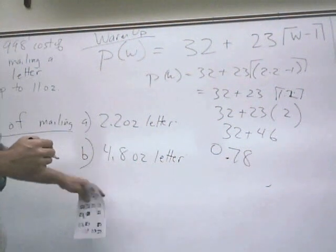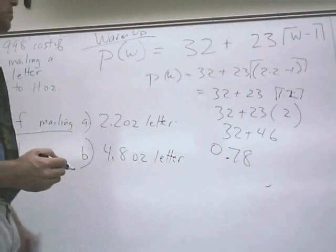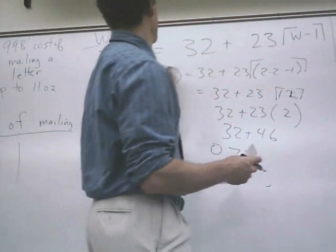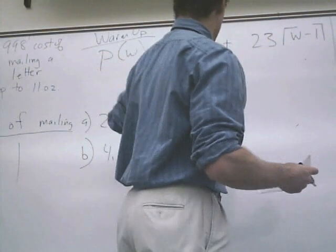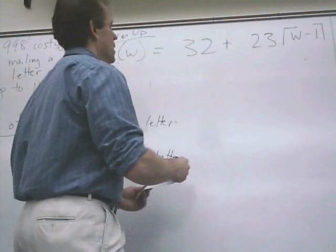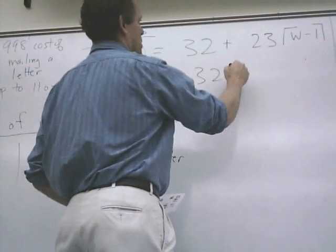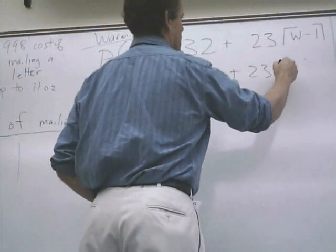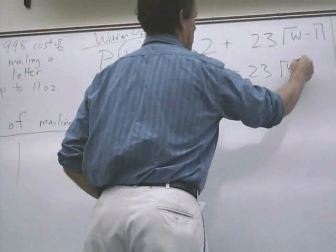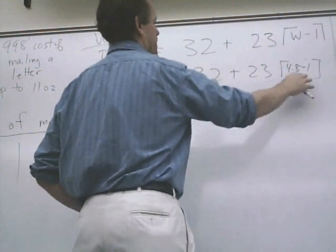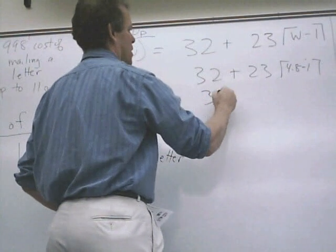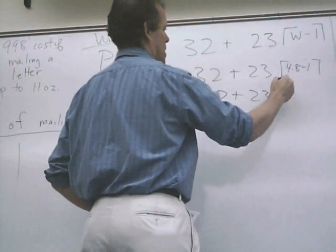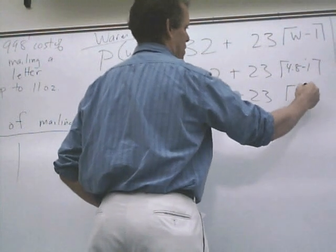And then a 4.8-ounce letter, same thing. I can just do 32 plus 23 times 4.8 minus 1. Careful. 32 plus 23 times 3.8.